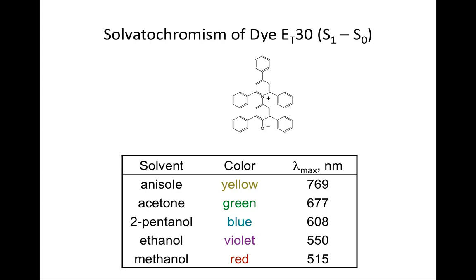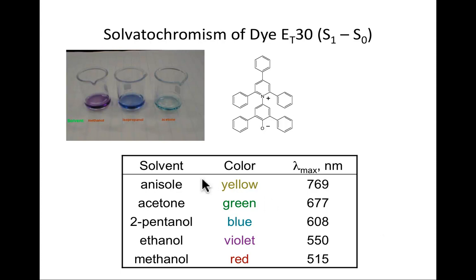And what one discovers if you make a solution of this molecule in different solvents is that the lambda max of absorption, which of course dictates what color you see within the liquid, varies tremendously as a function of solvent. So starting with anisole, which is certainly an unusual solvent, you get a yellow solution. And then when you go to acetone, the solution turns green. And as you work your way up into alcohols, you can go all the way to red.